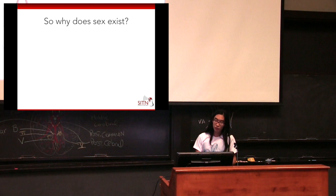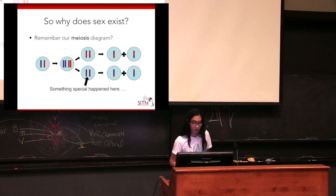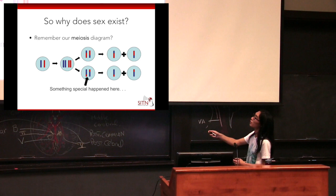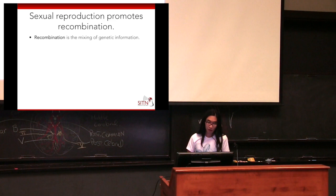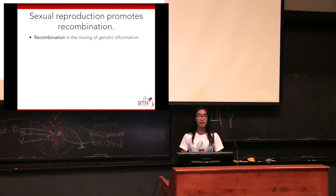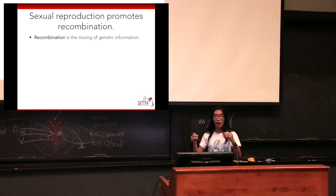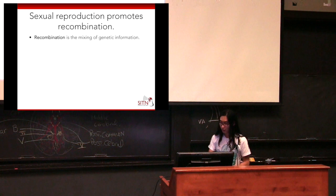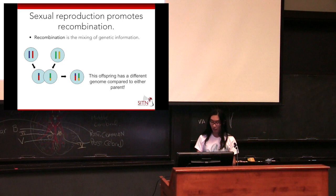So why then does sex exist? I'm going to touch on something I hinted at earlier — what's happening when these chromosomes get jumbled up in the middle step. That process is called recombination, which is the mixing of genetic information. It turns out that sexual reproduction promotes recombination. Because you have to have this fusing of meiotically generated cells, you have to have meiosis, and when you have meiosis you have recombination. In addition, you mix information from the two individuals that are having sex.